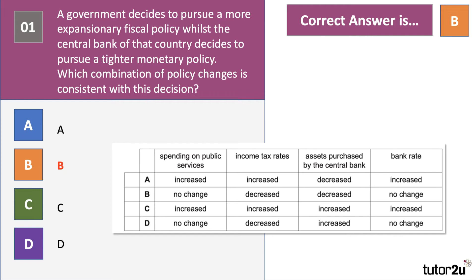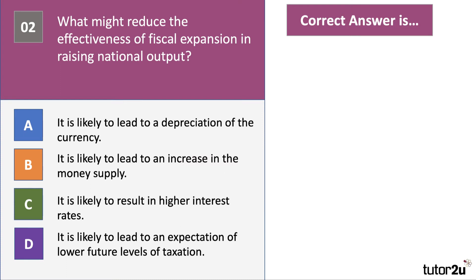A tighter monetary policy means the central bank would be decreasing their purchases of assets. Quantitative easing is when they significantly increase asset purchases to inject more cash and liquidity into the banking system, so a decrease in asset purchases is a contractionary form of QE. The bank rate is no change — one is contractionary, one is neutral. We do have an expansionary fiscal policy and a contractionary monetary policy, and that's why the answer is B.